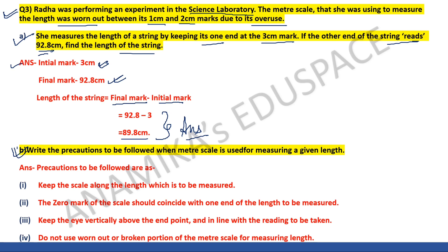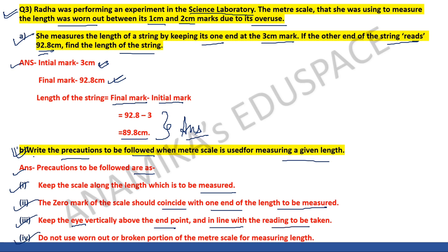Question 3B: write the precautions to be followed when a meter scale is used for measuring a given length. Precautions: one — keep the scale along the length to be measured. Two — the zero mark of the scale should coincide with one end of the length to be measured. Three — keep the eye vertically above the end point and in line with the reading to be taken. Four — do not use a worn out or broken portion of the meter scale for measuring the length.